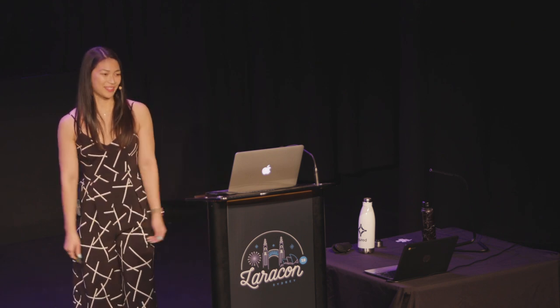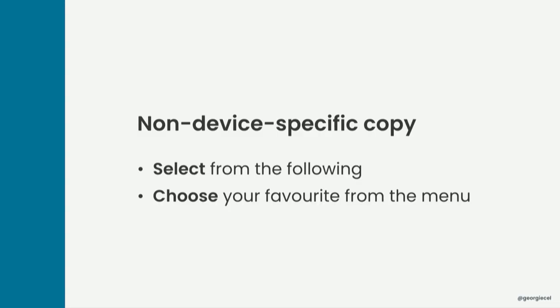Non-device-specific copy: sometimes we use the words 'click here' or 'tap here' on websites and emails, which assumes the user is using a mouse or their finger, and it's not really inclusive. We should try to use more universal language such as 'select from the following menu' rather than 'click an item', and maybe 'choose' is another good word to use.